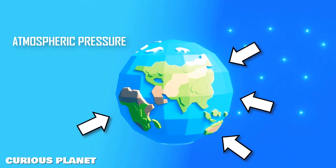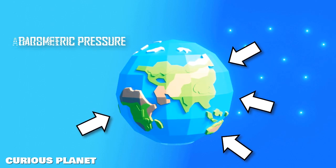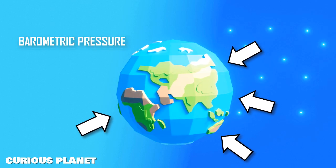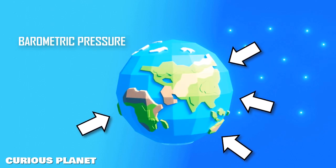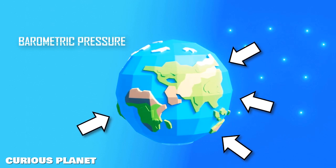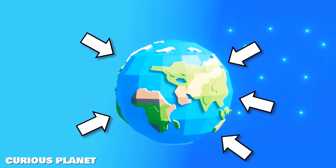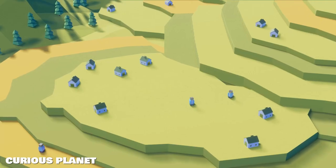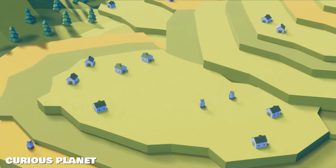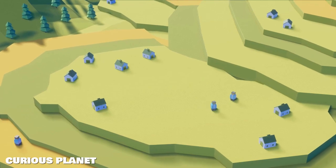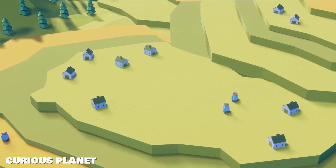Atmospheric pressure, also known as the barometric pressure, is the pressure of the atmosphere of the earth that acts on its surface, also on all of the life forms present on it.